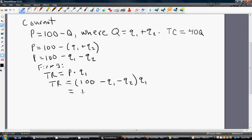This will simplify down to 100 Q subscript 1 minus Q subscript 1 squared minus Q subscript 1 times Q subscript 2.